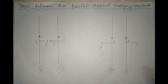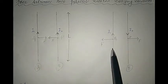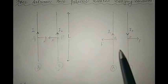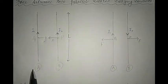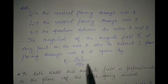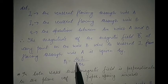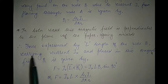Now let i1 be the current flowing through wire A and i2 be the current flowing through wire B. Also let r be the separation between the two wires. If B1 is the magnetic field at any point on wire B due to current i1 flowing through wire A, then B1 is given by μ₀i1 / 2πr. We get this from Ampere's circuital law or from the Biot-Savart law, where the magnetic field due to a straight current-carrying wire equals μ₀i / 2πr. In both cases, this magnetic field is perpendicular to the plane of the paper and going inwards.